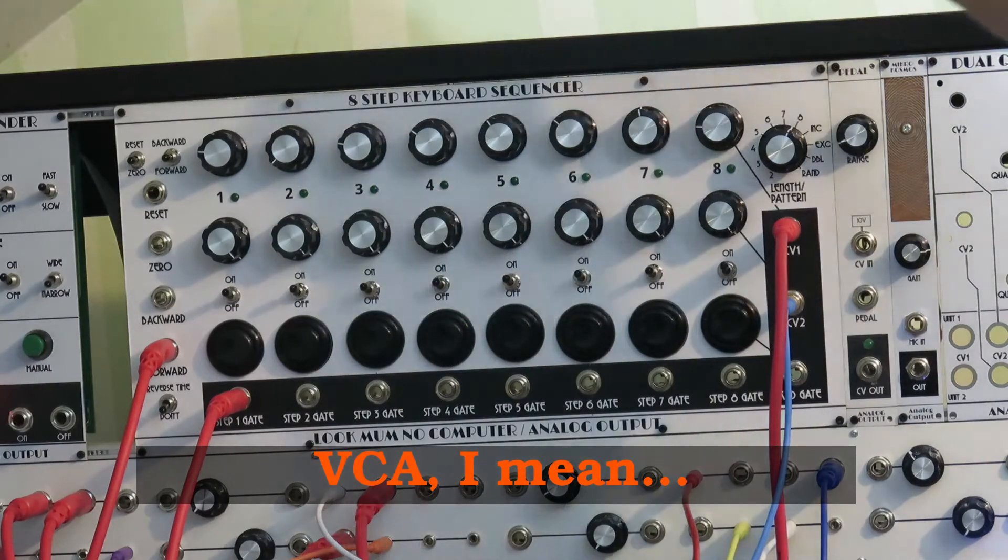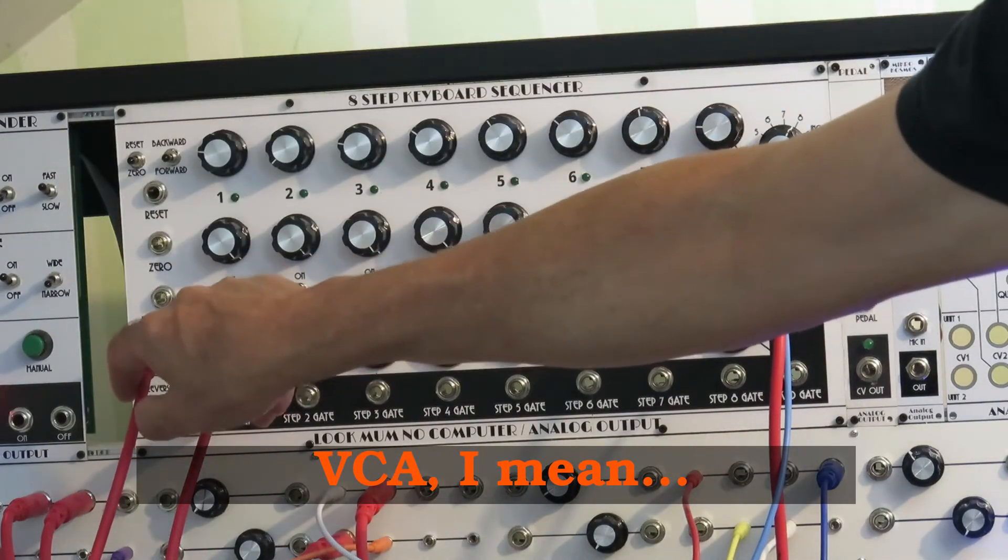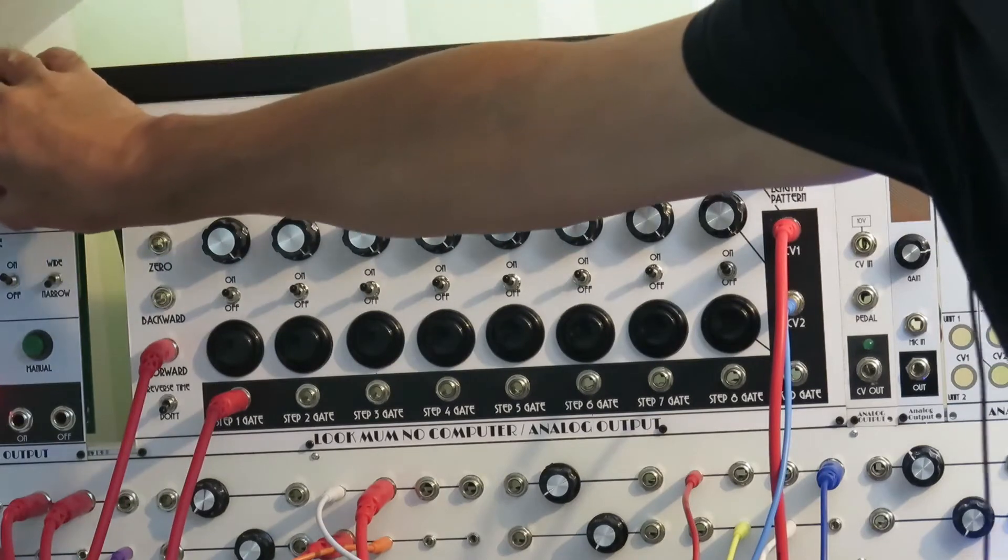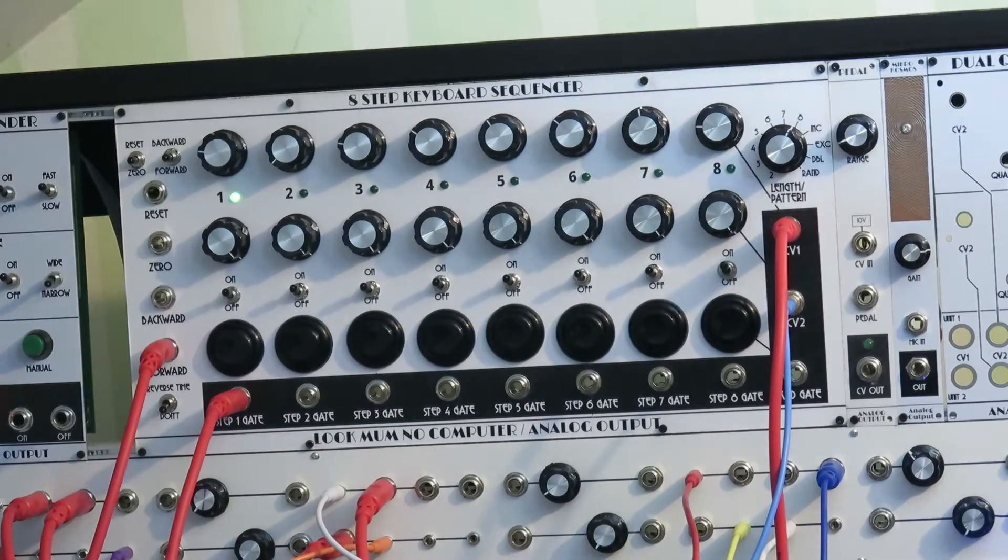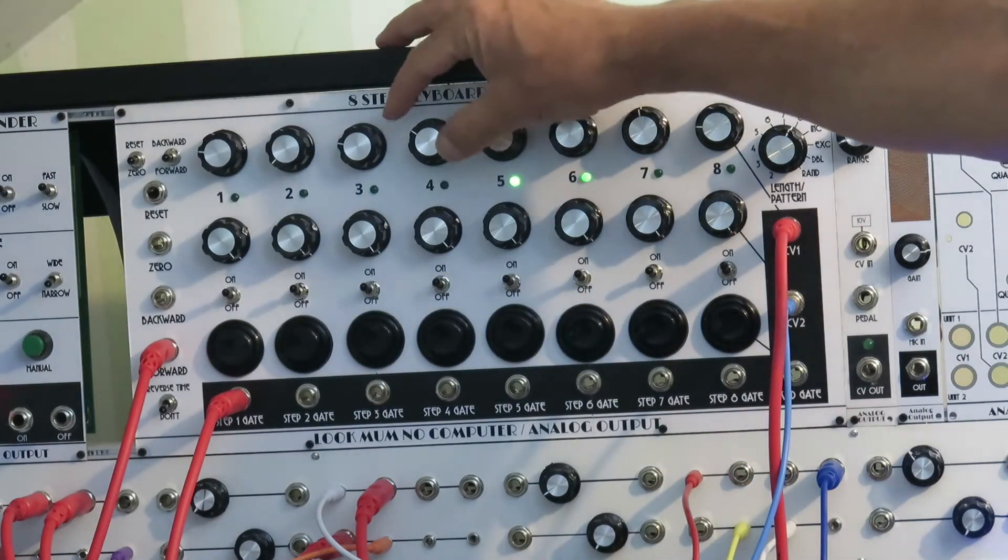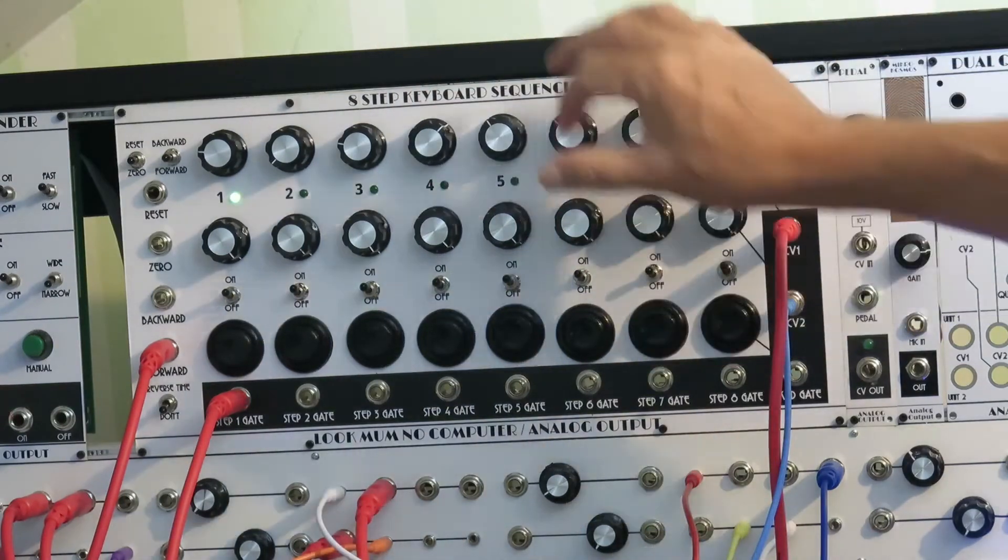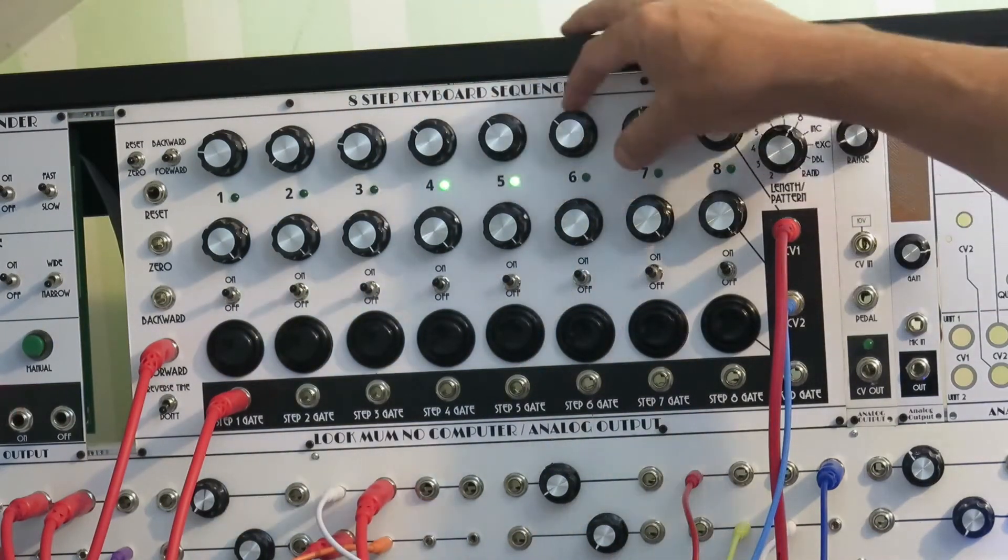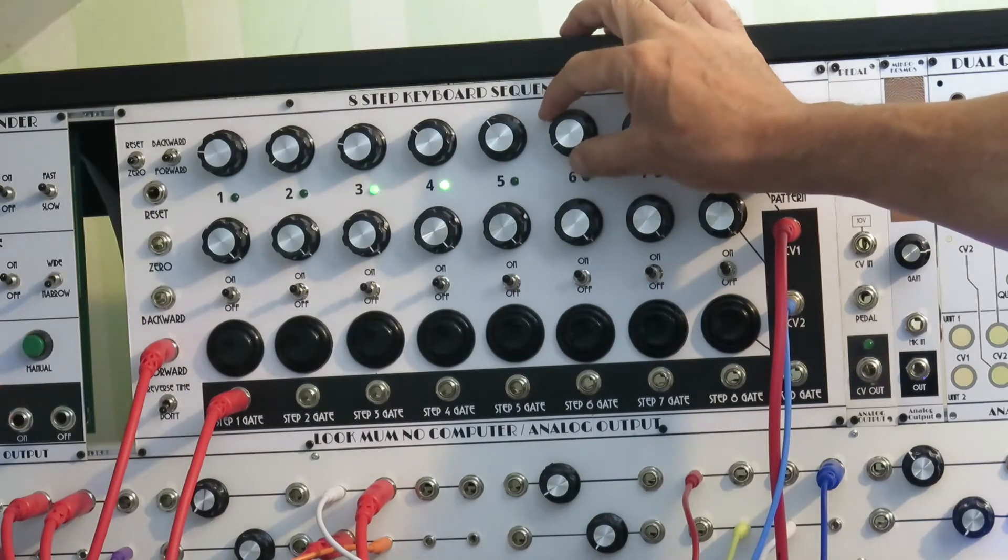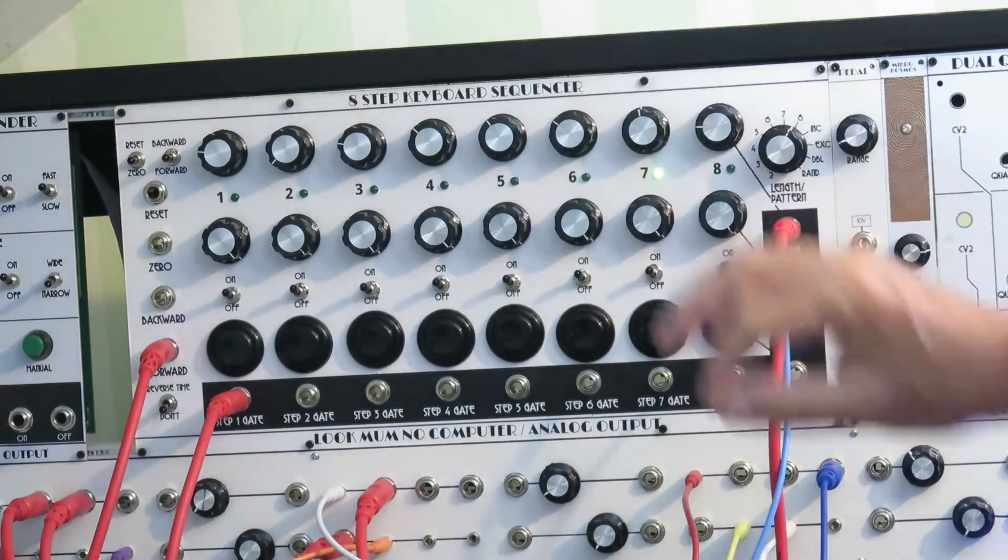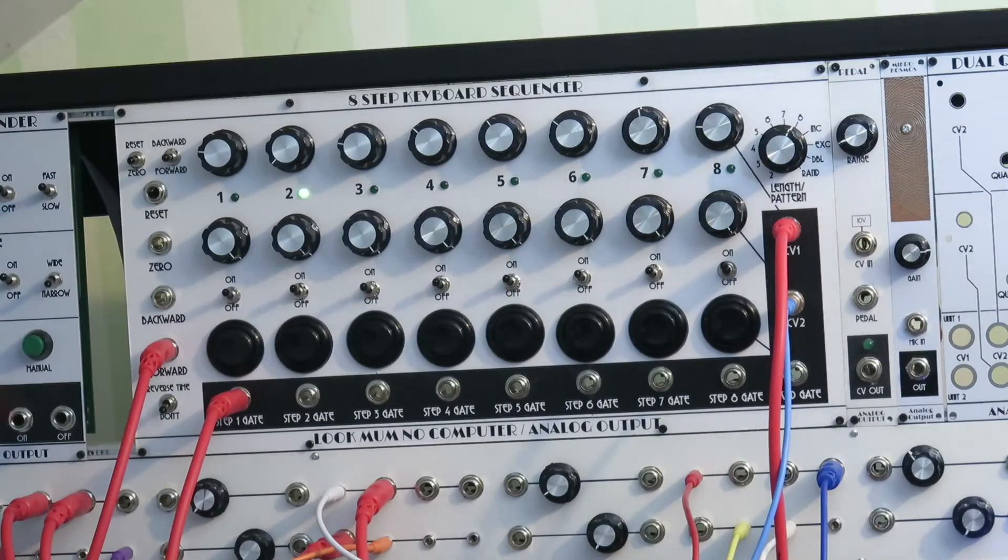So if we put a clock into the forward jack, we get our sequence. And we can play around with the notes if we want to. And so on. Typical stuff.